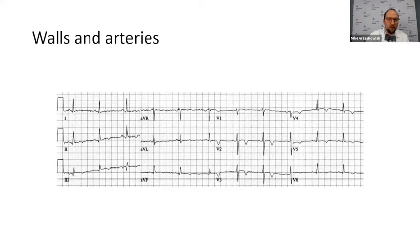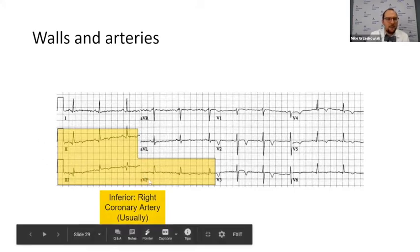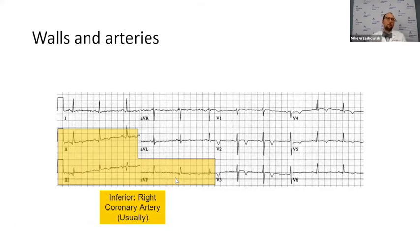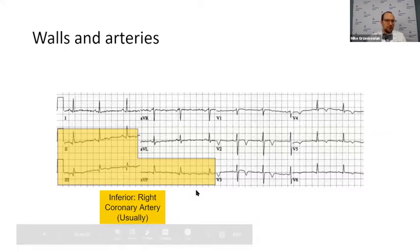Let's go through these and then talk about this further. The first ones are the inferior leads — 2, 3, and AVF. They represent the inferior wall of the heart, which is mainly supplied by the right coronary artery. 80% of patients have the inferior wall supplied by the right coronary artery; 20% have it supplied by the left circumflex. This is important because inferior wall MIs are very important to know about in the field, as our management is different.